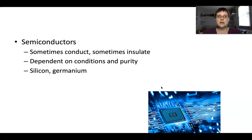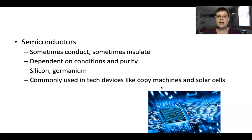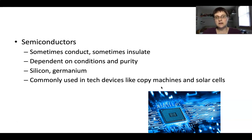Silicon and germanium are commonly used in tech devices like copy machines and solar cells because of this semiconductor property. When you do certain things to them — like change temperature — that will allow them to work either as a conductor or an insulator, depending on what you need them to do at that specific moment in the device.